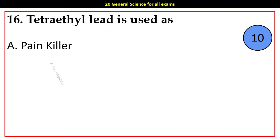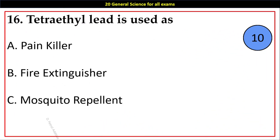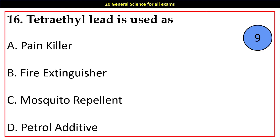Question number 16. Tetraethyl lead is used as: Options A. Painkiller, B. Fire Extinguisher, C. Mosquito Repellent, D. Petrol Additive. Answer: D. Petrol Additive.